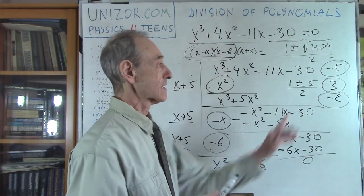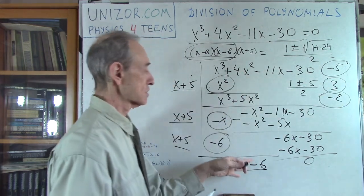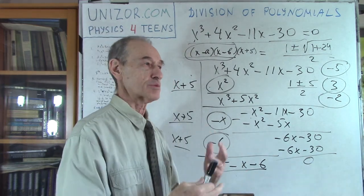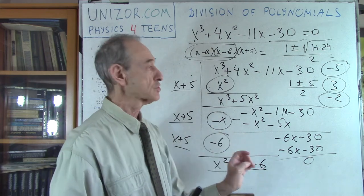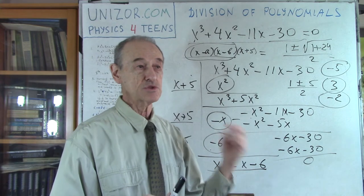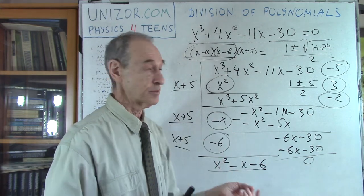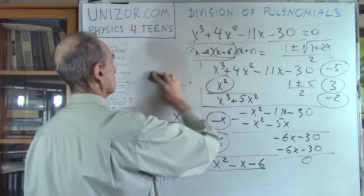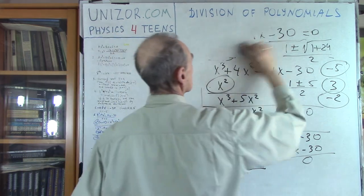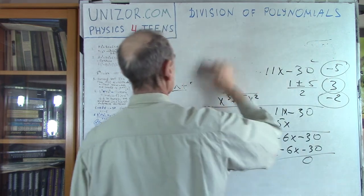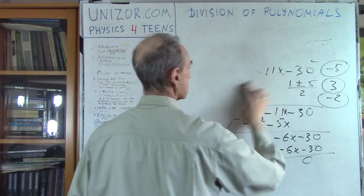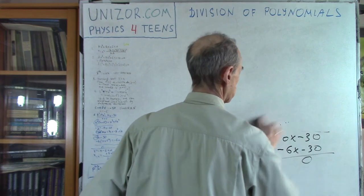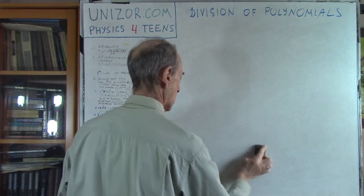Again, how? By guessing one of the roots and then dividing using this polynomial division technique. As you can see, it's just a technique. This lecture is not really very theoretical — just a technique: how to reduce the order of the equation in case you know one particular root.